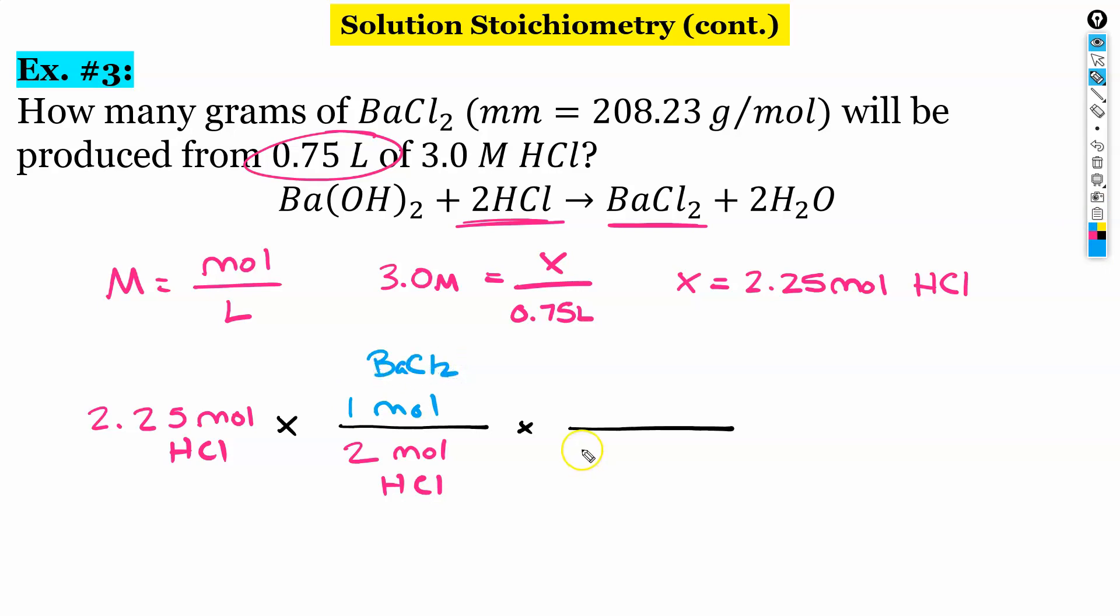And then I need that molar mass of barium chloride. So for every 1 mole of barium chloride, the molar mass is, given in the question, so 208.23 grams of barium chloride. And when I do the math here on my calculator, I get 234.258. And we want two sig figs. So my answer will be 230. Remember that zero doesn't count when there isn't a decimal. 230 grams. And that is solution stoichiometry.